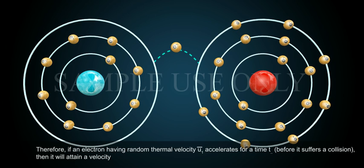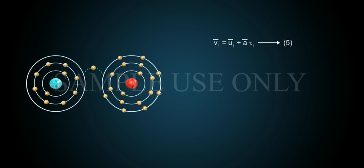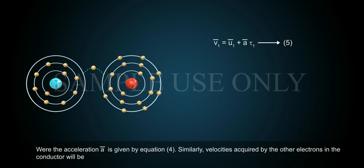Therefore, if an electron having random thermal velocity u1 bar accelerates for a time tau1 before it suffers a collision, then it will attain a velocity v1 bar equals to u1 bar plus a bar tau1 — equation 5 — where the acceleration a bar is given by equation 4.